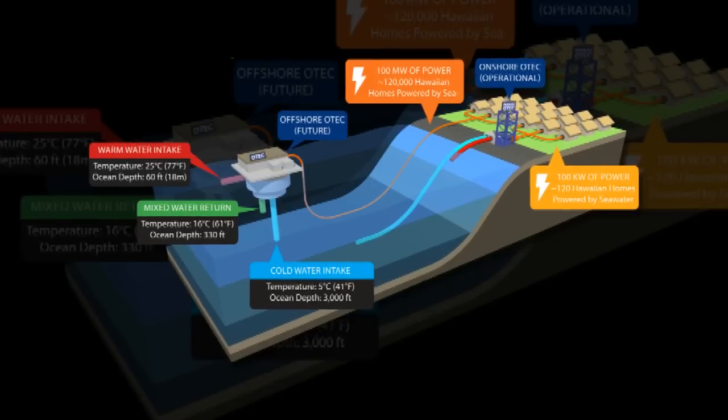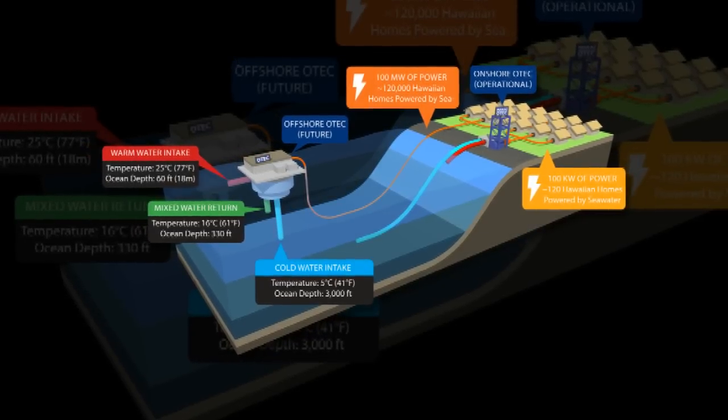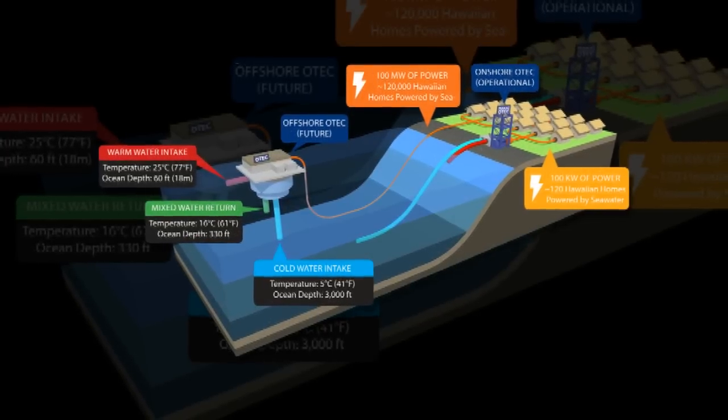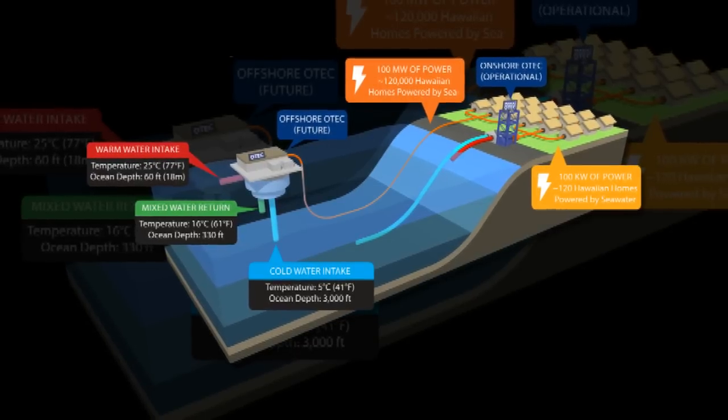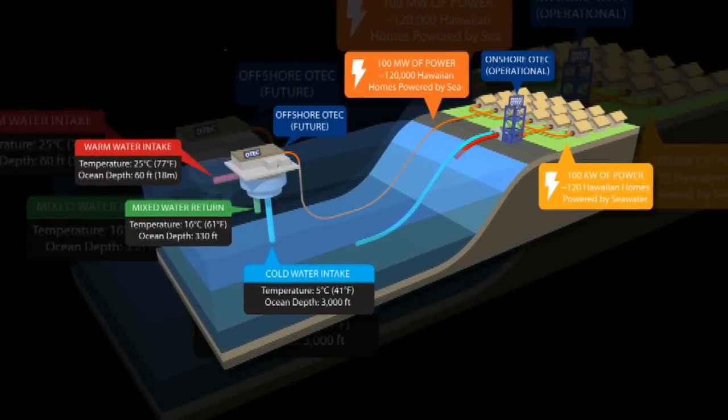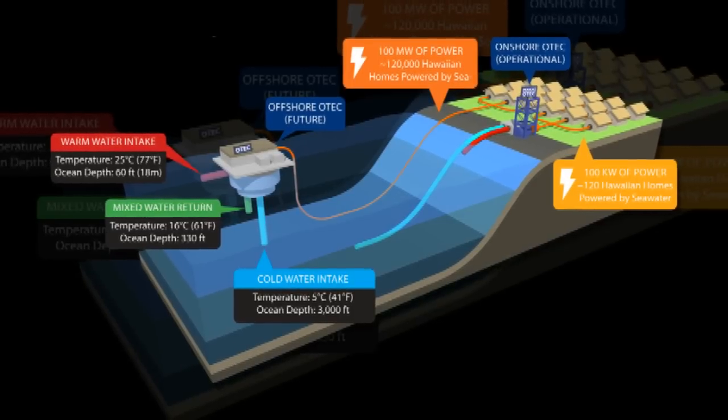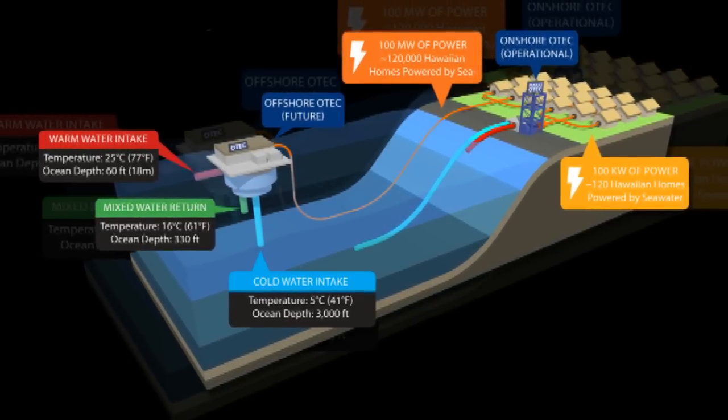Griggs said the plant, built by Mackay Ocean Engineering and situated at the Natural Energy Laboratory of Hawaii Authority, NELA, expects to generate enough energy to power 120 homes per year and is the largest plant of its kind in the world.